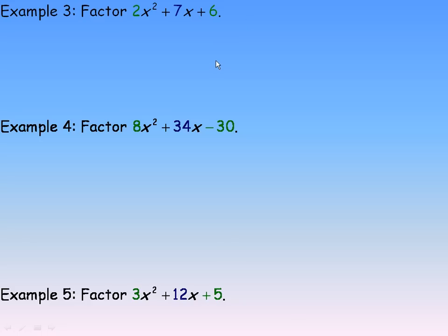Flipping over to the examples on the second page, we're asked in number 3 to factor 2x squared plus 7x plus 6. So again, you would look for two numbers that add to 7 and multiply to 12, because 2 and 6 multiply to 12.